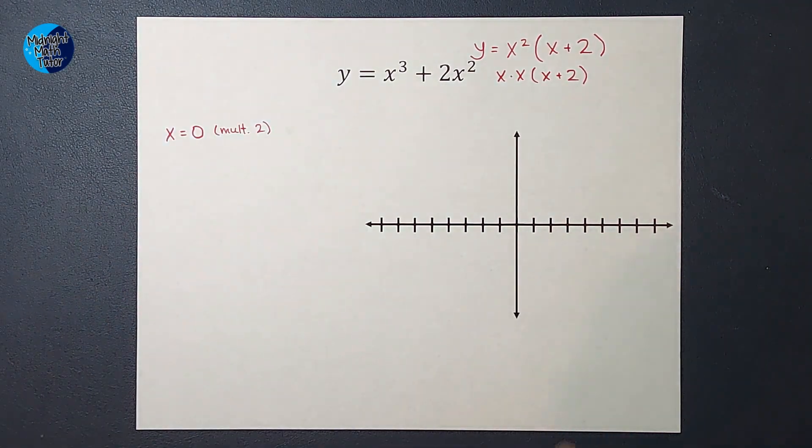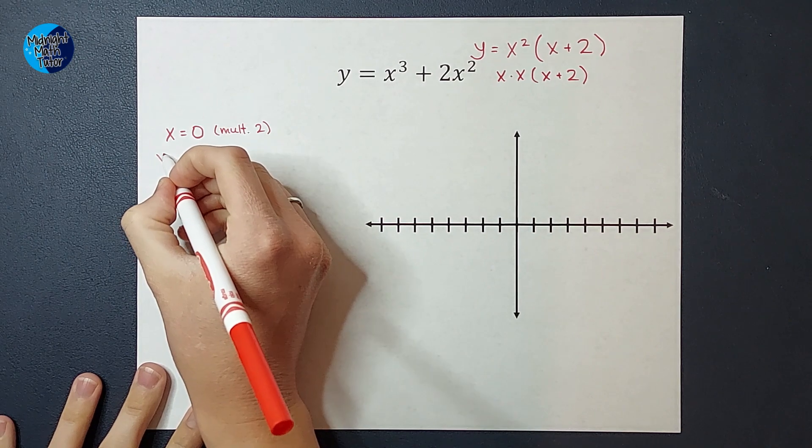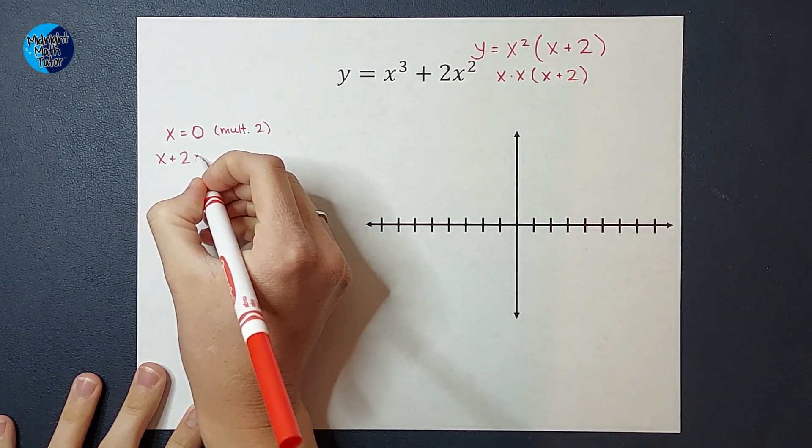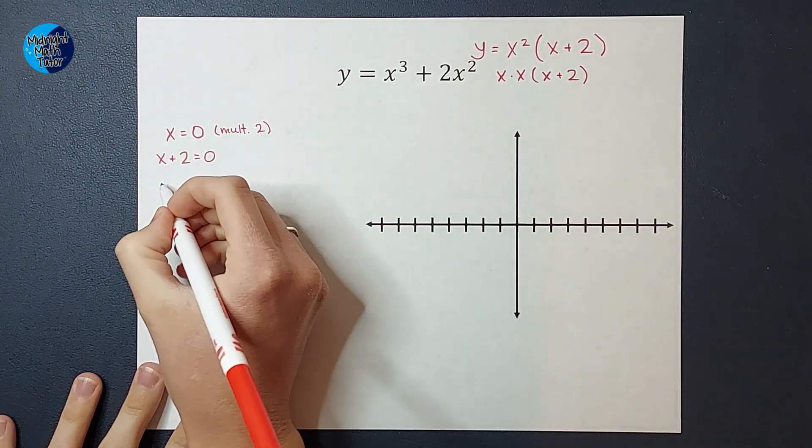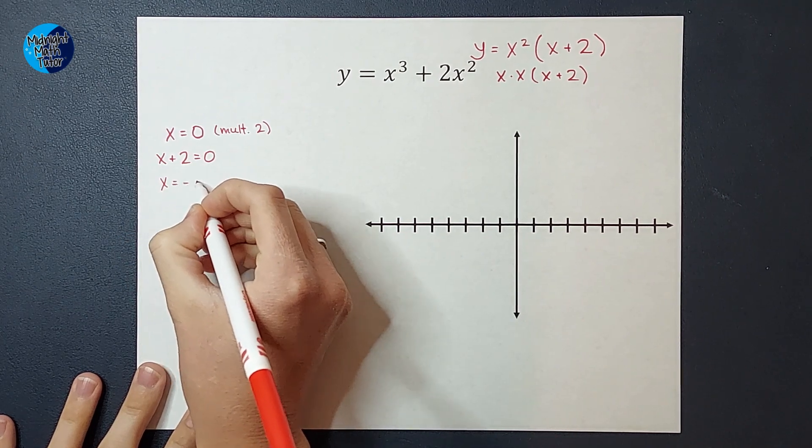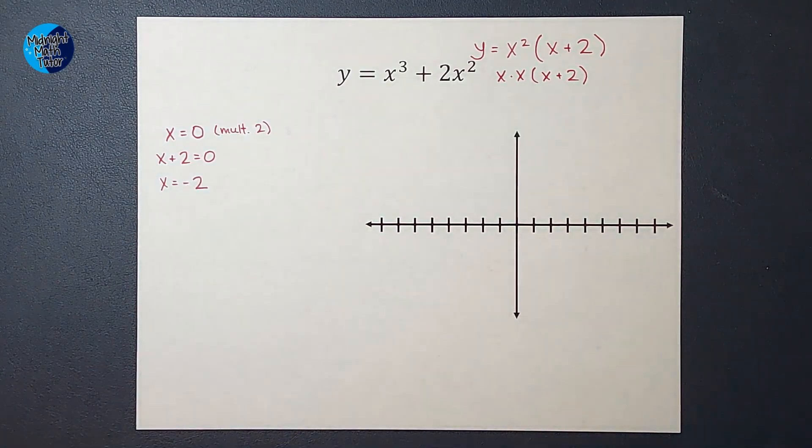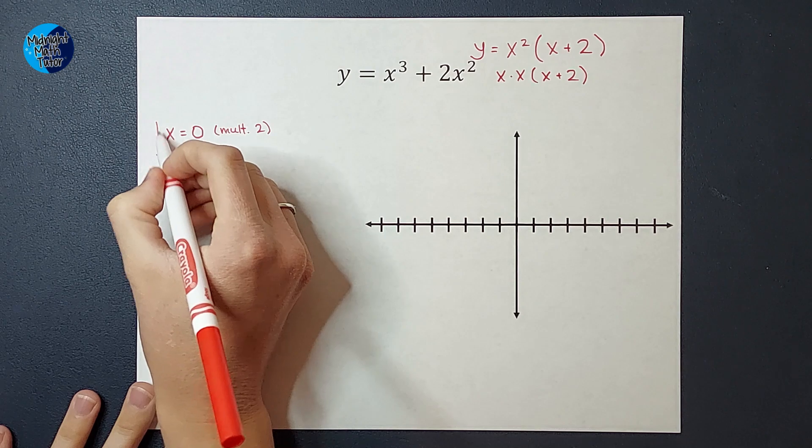And then I'm going to set this guy equal to zero, so x plus two equals zero, and when I solve that down I get x equals negative two. So these are my zeros: x equals zero and x equals negative two.